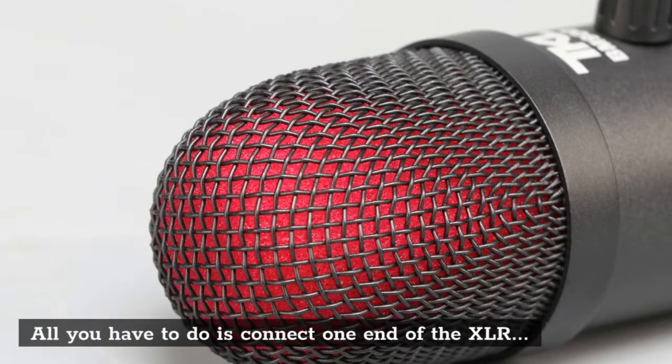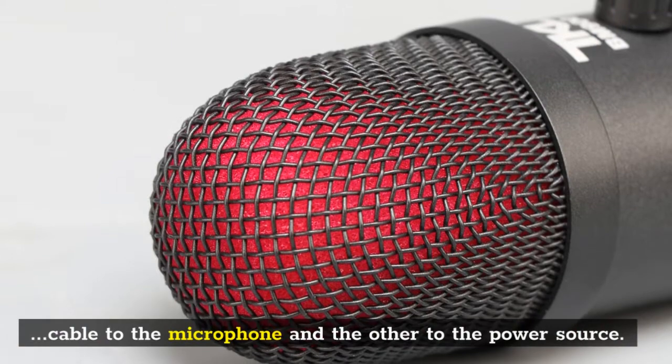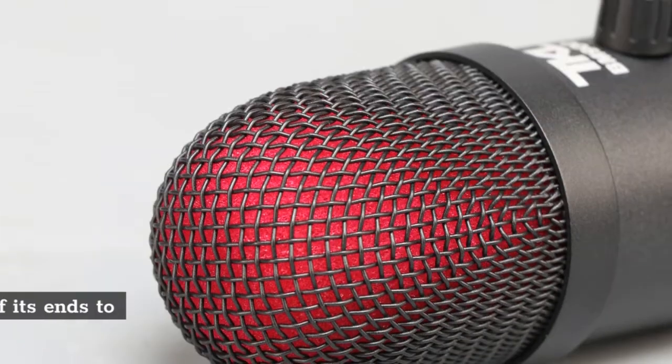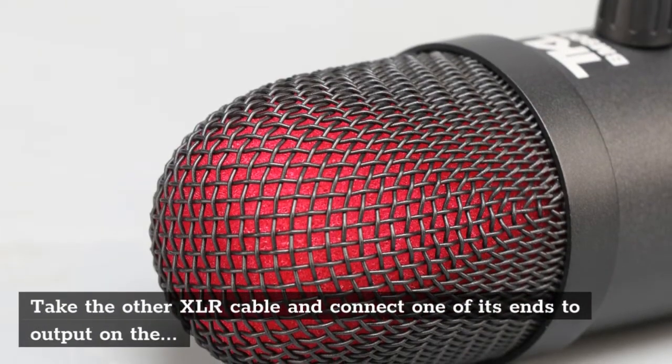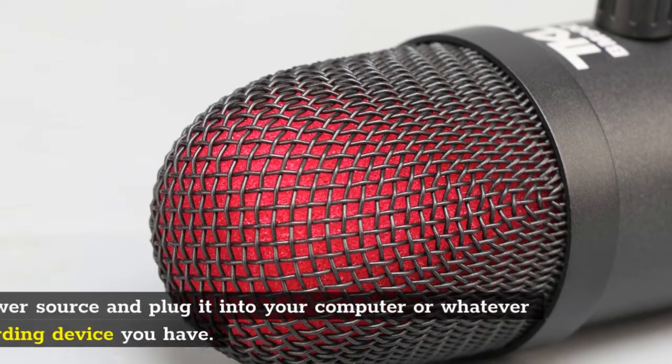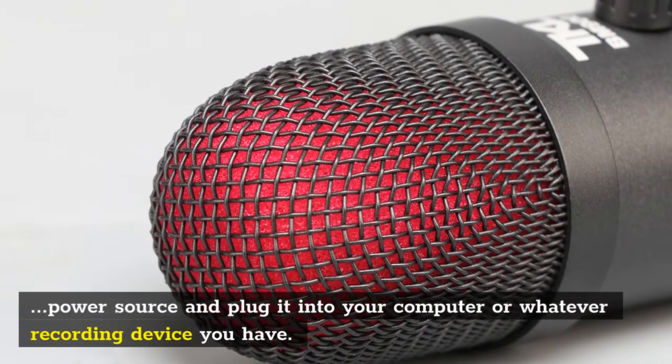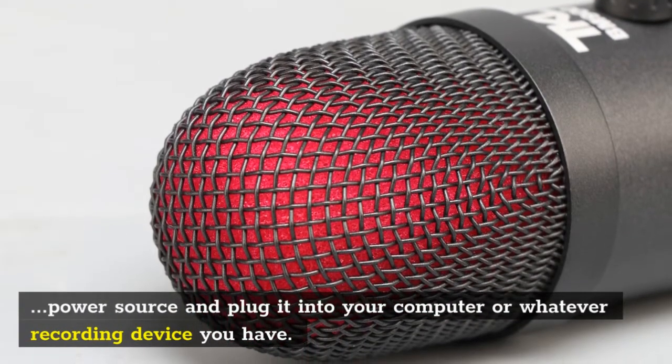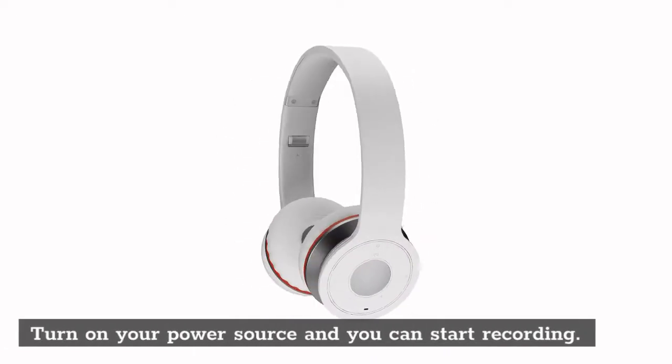All you have to do is connect one end of the XLR cable to the microphone and the other to the power source. Take the other XLR cable and connect one of its ends to output on the power source and plug it into your computer or whatever recording device you have. Turn on your power source and you can start recording.